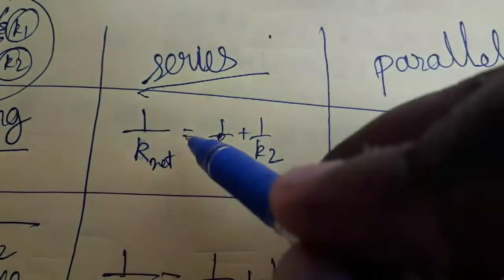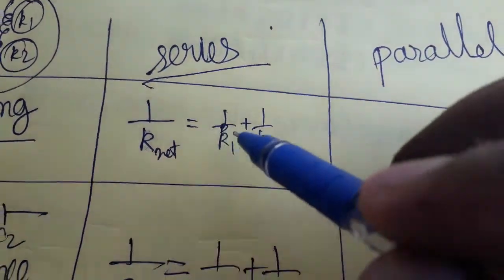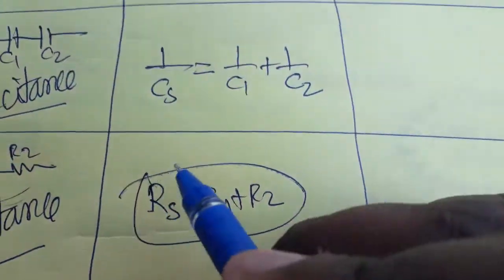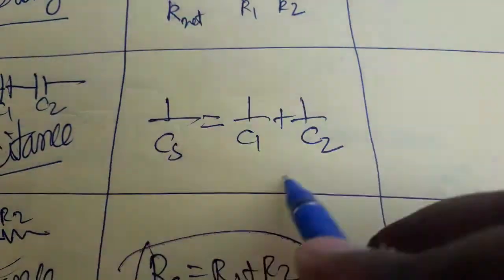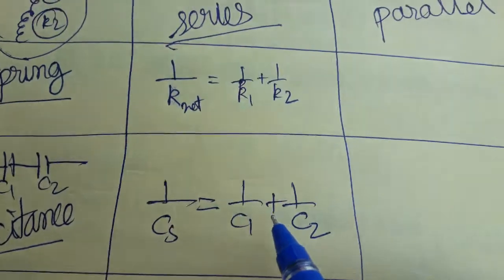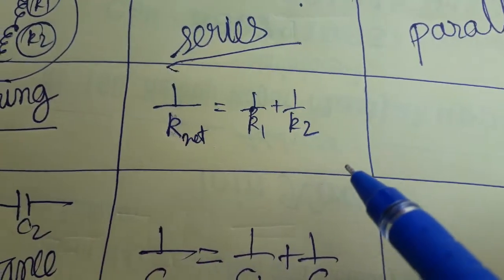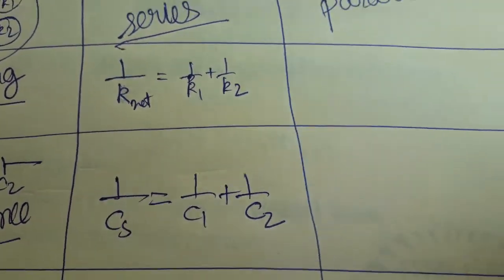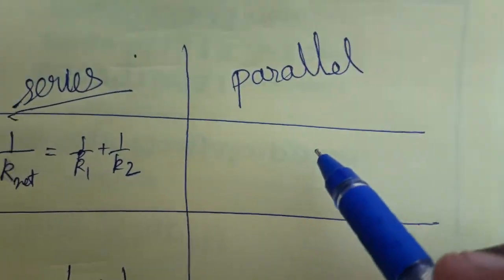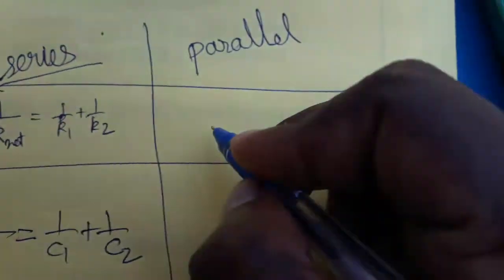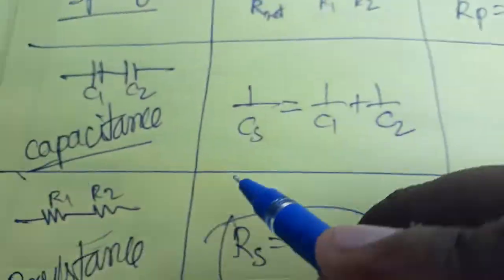So in series: resistance is r1 plus r2, while capacitance and spring are in the denominator form. Now let's look at parallel. For spring connected in parallel, kp = k1 + k2 — both we have to add.